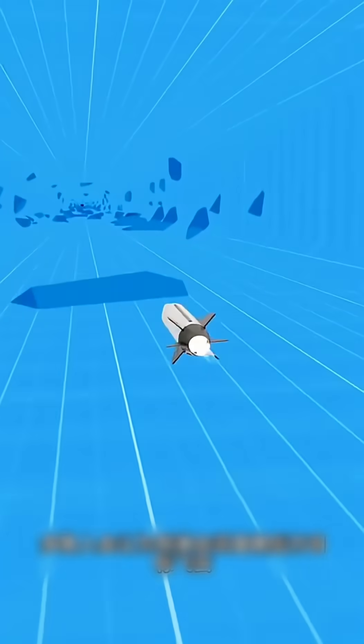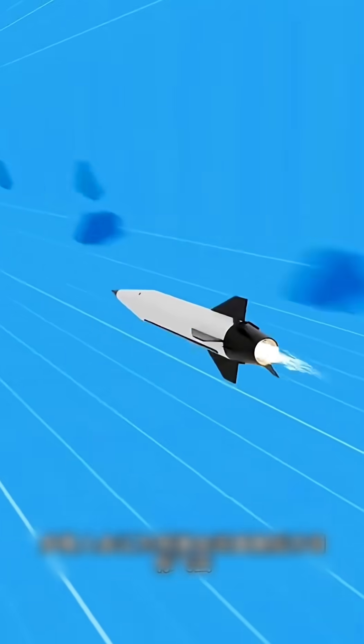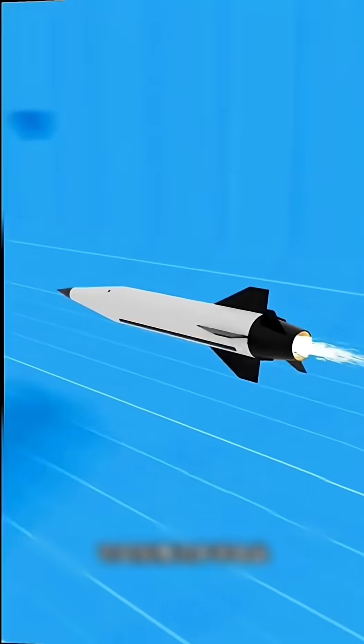If a fighter jet fires a missile backwards, most people would think that the missile would fly straight towards the target behind. But the reality is not like this.